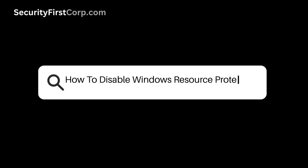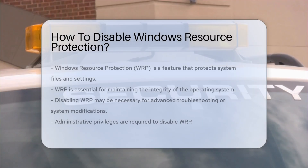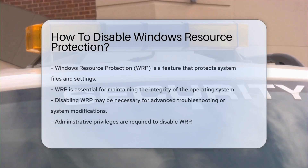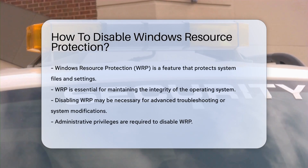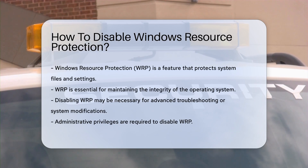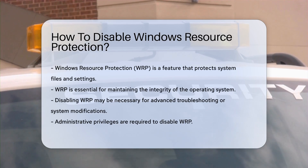How to disable Windows Resource Protection? Windows Resource Protection, or WRP, is a feature designed to safeguard system files and settings. It plays a critical role in maintaining the integrity of the operating system.